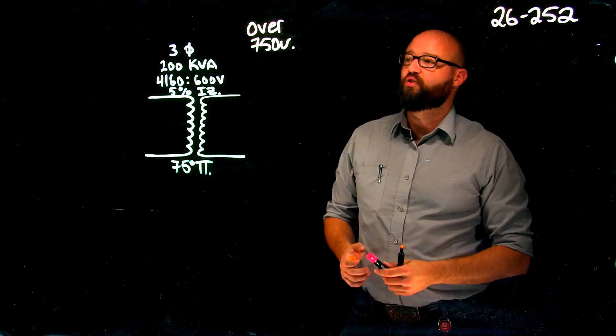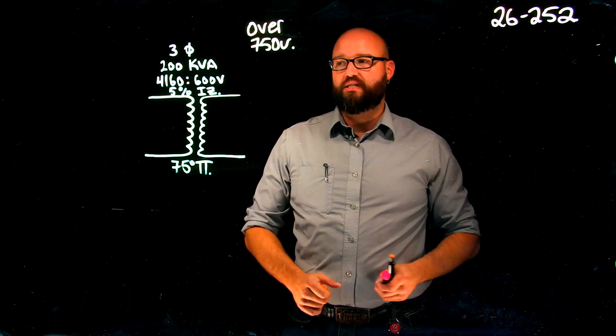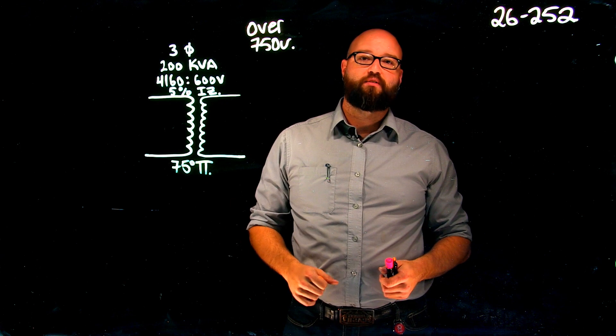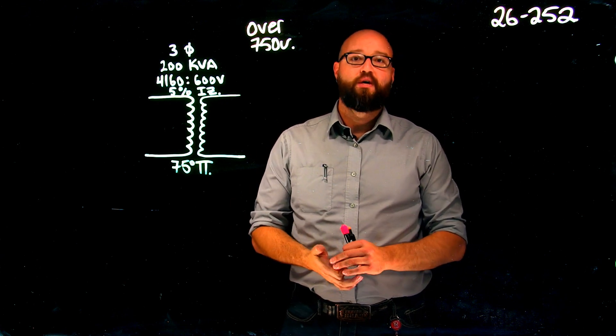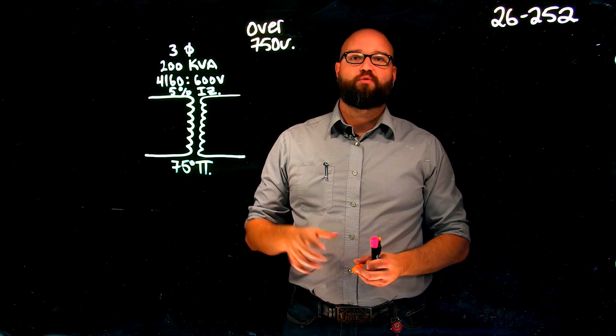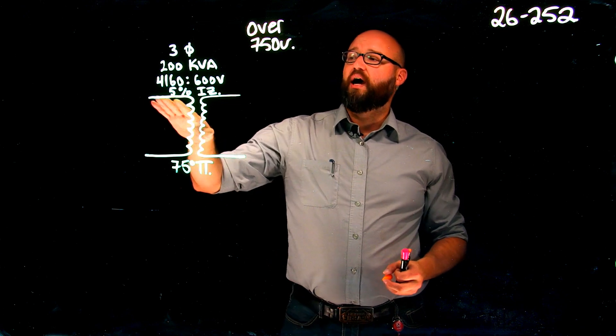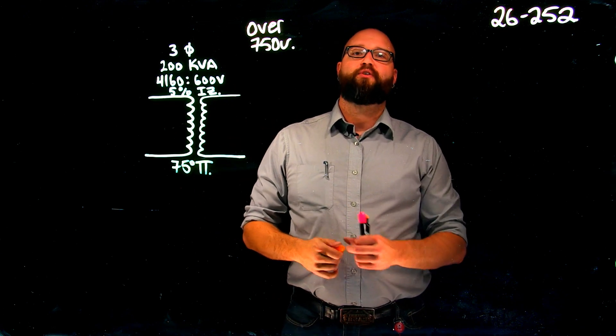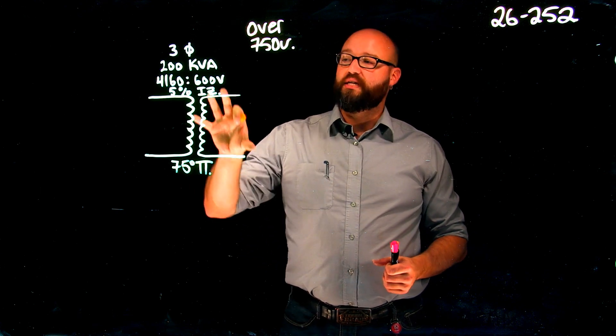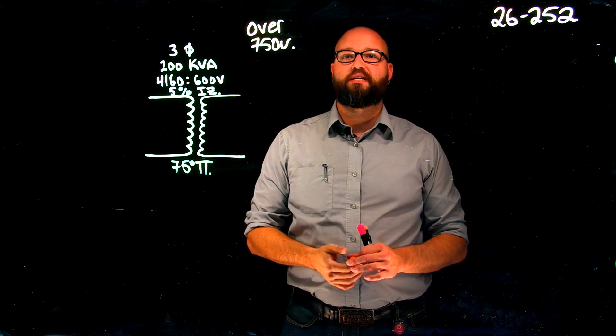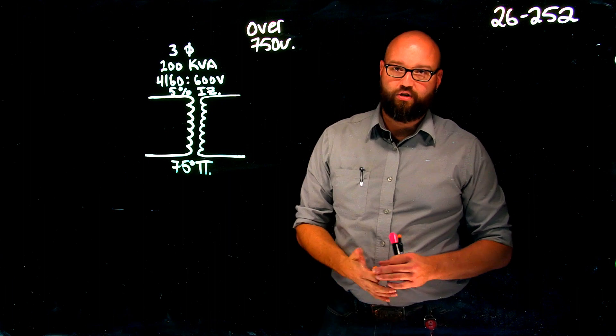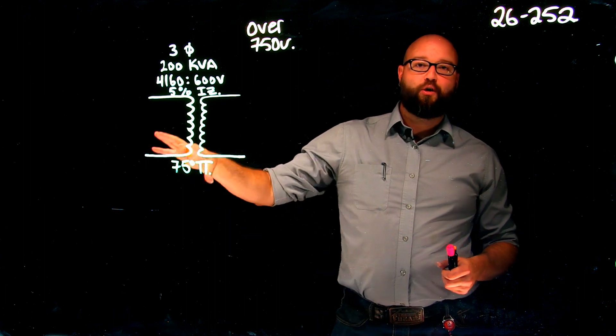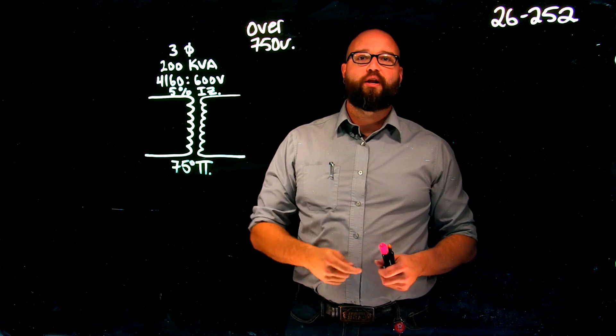We have a 200 kVA transformer, 4160 step down to 600 volts. Take note, it is a three phase transformer. Previous videos, we talked about what we do with three phase calculation. We have a 5% IZ on this transformer. When we're dealing with high voltage transformers, we need to be cognizant of that percent IZ because it's going to help us determine our overcurrents. As always, we need to figure out what is our primary rated current and secondary rated current.